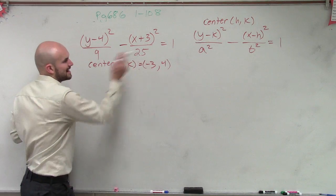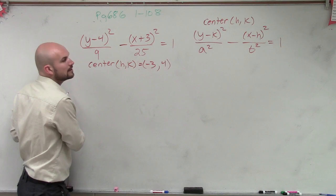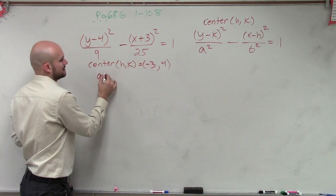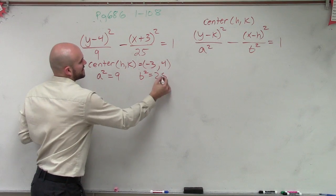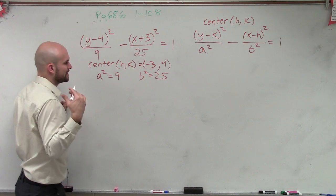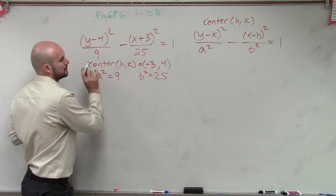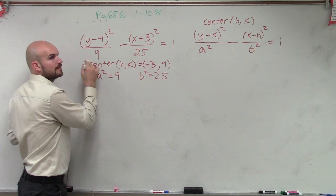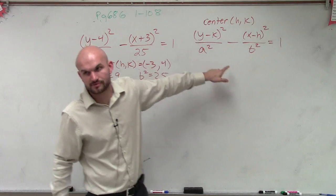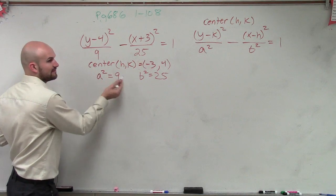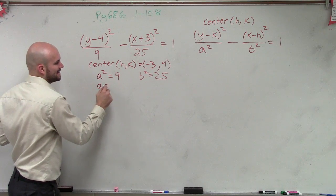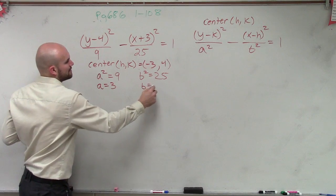All right, so we have our center is negative 3 comma 4. Now we know our a, a squared equals 9, and b squared equals 25. A squared is 9, right? Your a squared's right up there. So now, if I know a squared is 9, then I know a equals 3, and b equals 5.